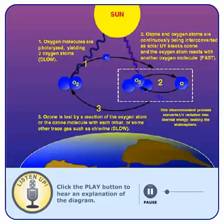In the first step, oxygen molecules are photolyzed by UV rays from the sun into two oxygen atoms—nascent oxygen atoms.